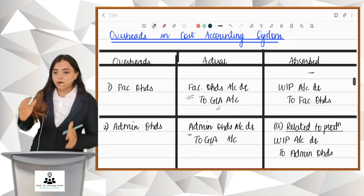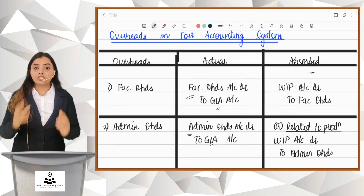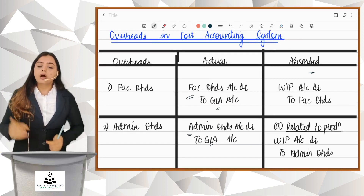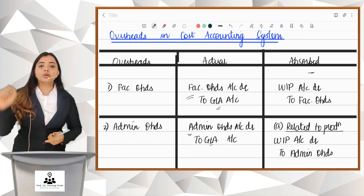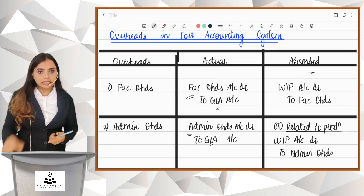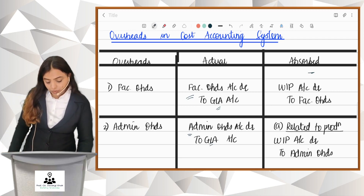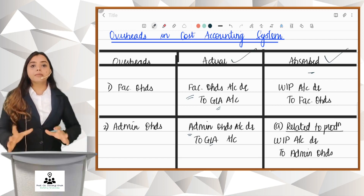When you account for these overheads, remember you have to pass two entries for each overhead. One entry will be for the actual overheads incurred, and the second entry will be for the absorbed amount.